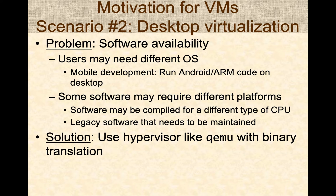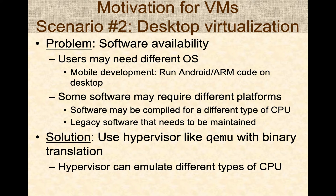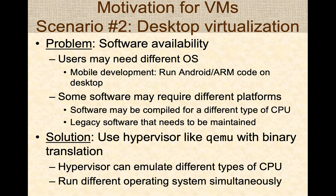The solution here is to use a hypervisor like QEMU or VirtualBox. QEMU also does what's known as binary translation, meaning it can emulate different hardware and CPUs, making development and testing much easier. These hypervisors can emulate different types of CPUs or devices. On a desktop with virtualization, you can run different operating systems simultaneously — just moving your mouse from one window to another lets you go from Mac to Windows to Linux seamlessly, streamlining software development and maintenance.